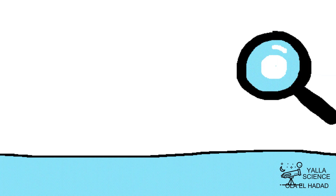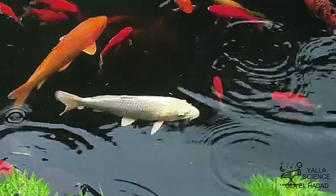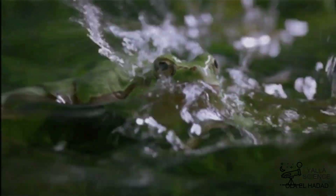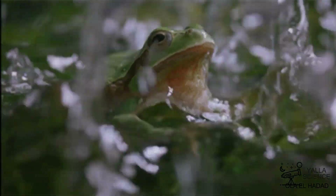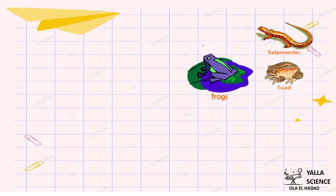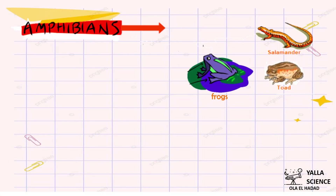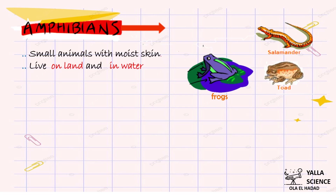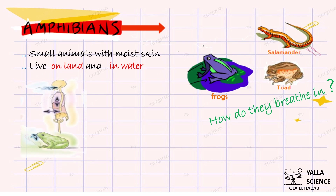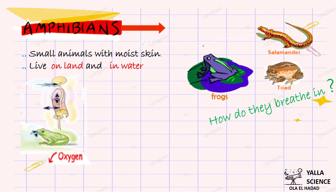And they release carbon dioxide. But not all creatures living under water use gills to breathe. The amphibians — the family of frogs, toads, and salamanders — are small animals that live in water and on land. Their bodies are covered with skin. On land, they are like humans: they take in oxygen and produce carbon dioxide using lungs.